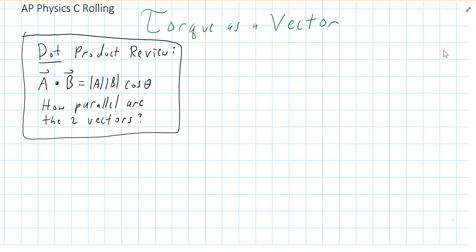Today we're going to talk about torque as a vector. We've already talked about torque quite a bit, but we have skipped one important thing — the direction of torque. This idea is going to lead into angular momentum, rolling, and so on.